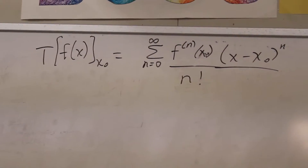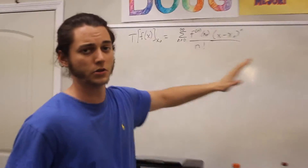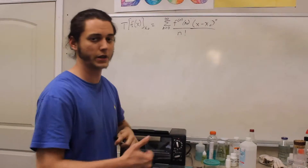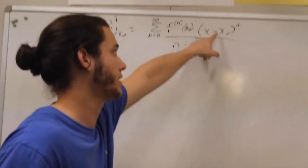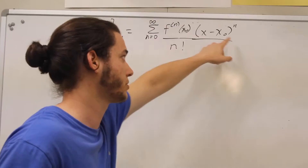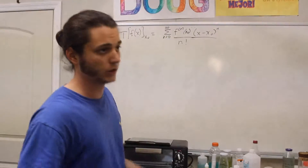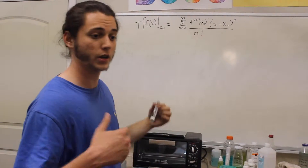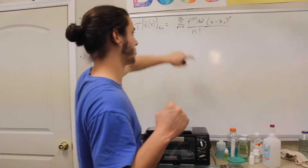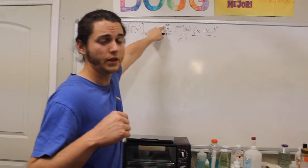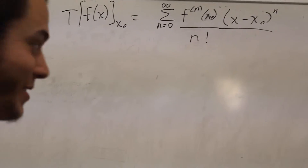So if you've learned that already, great. If you haven't, that's what it looks like. You just take successive derivatives of a function — first derivative, second derivative, third derivative, fourth derivative — and then you multiply by x minus x₀ to the first, x minus x₀ to the second, et cetera, divided by one factorial, two factorial, and so on. You can approximate a function, or get an exact function if the series is infinite. Okay, that's Taylor series.